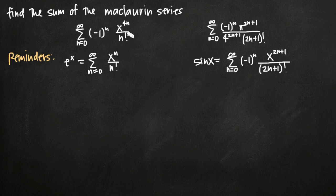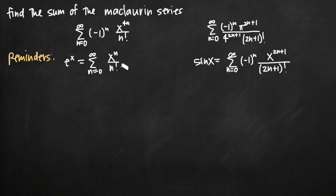To go alongside this, we have the fact that the infinite sum from n equals zero to infinity of x to the n divided by n factorial is equal to e to the x. We can see that our series is in a similar form to this one but not exactly the same. If we can get it into a matching format, then we can use the fact that the sum of this series is e to the x to find the sum of our series.